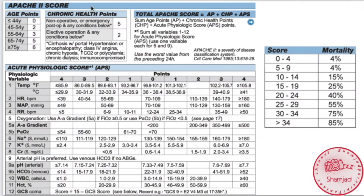Here we can see more details about APACHE scoring for age points. If the age is less than or equal to 44, the score will be 0. If the age is more than or equal to 75, the score will be 6. In between: age 45–54 scores 2, age 55–64 scores 3, and age 65–74 scores 5.